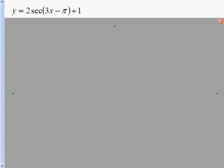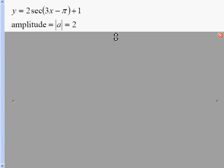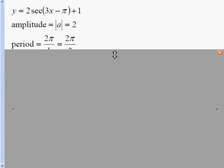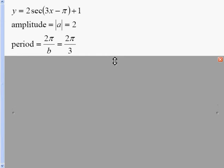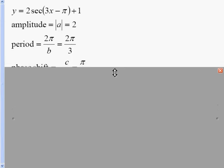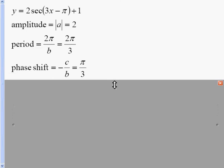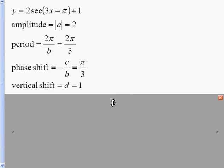Y equals 2 secant of 3x minus π, and then plus 1 on the outside. Amplitude is 2, the number in front of secant. Our period is 2π over b, so that's 2π over 3. Our phase shift is opposite of the inside divided by b, so that's π over 3. And we have a vertical shift of 1.